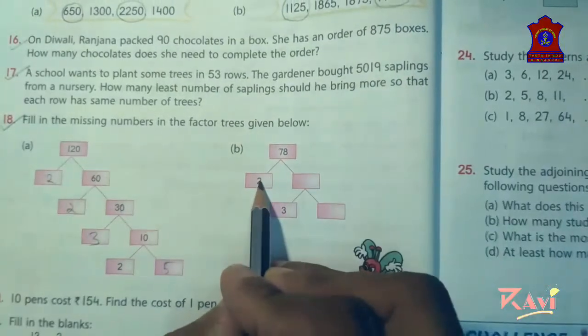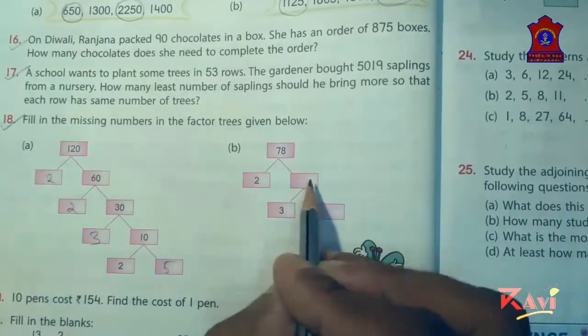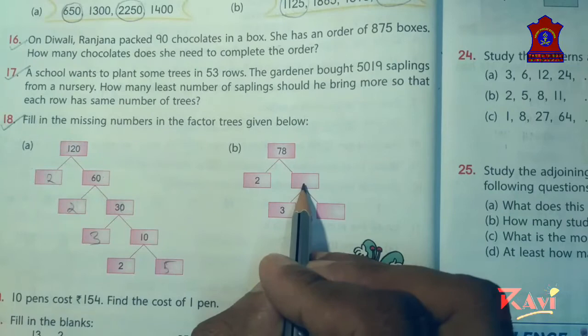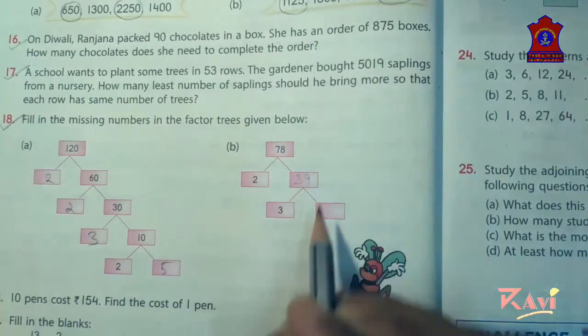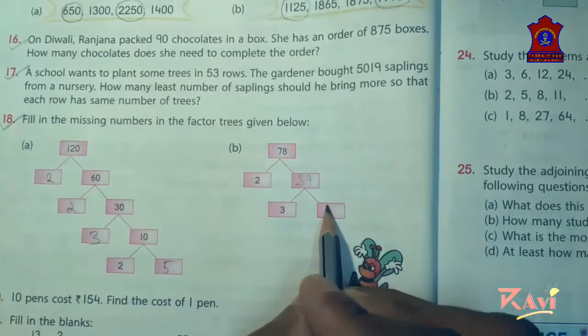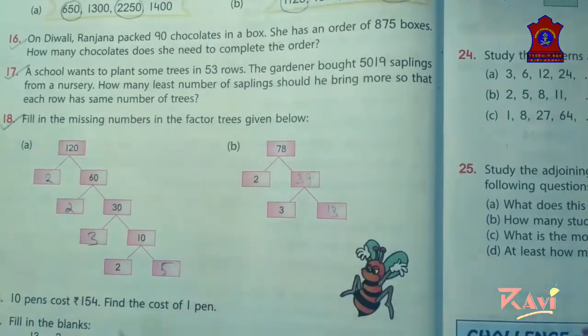Similarly here 2 into what makes 78? 39. And 3 into what makes 39? 13. Like this you have to do.